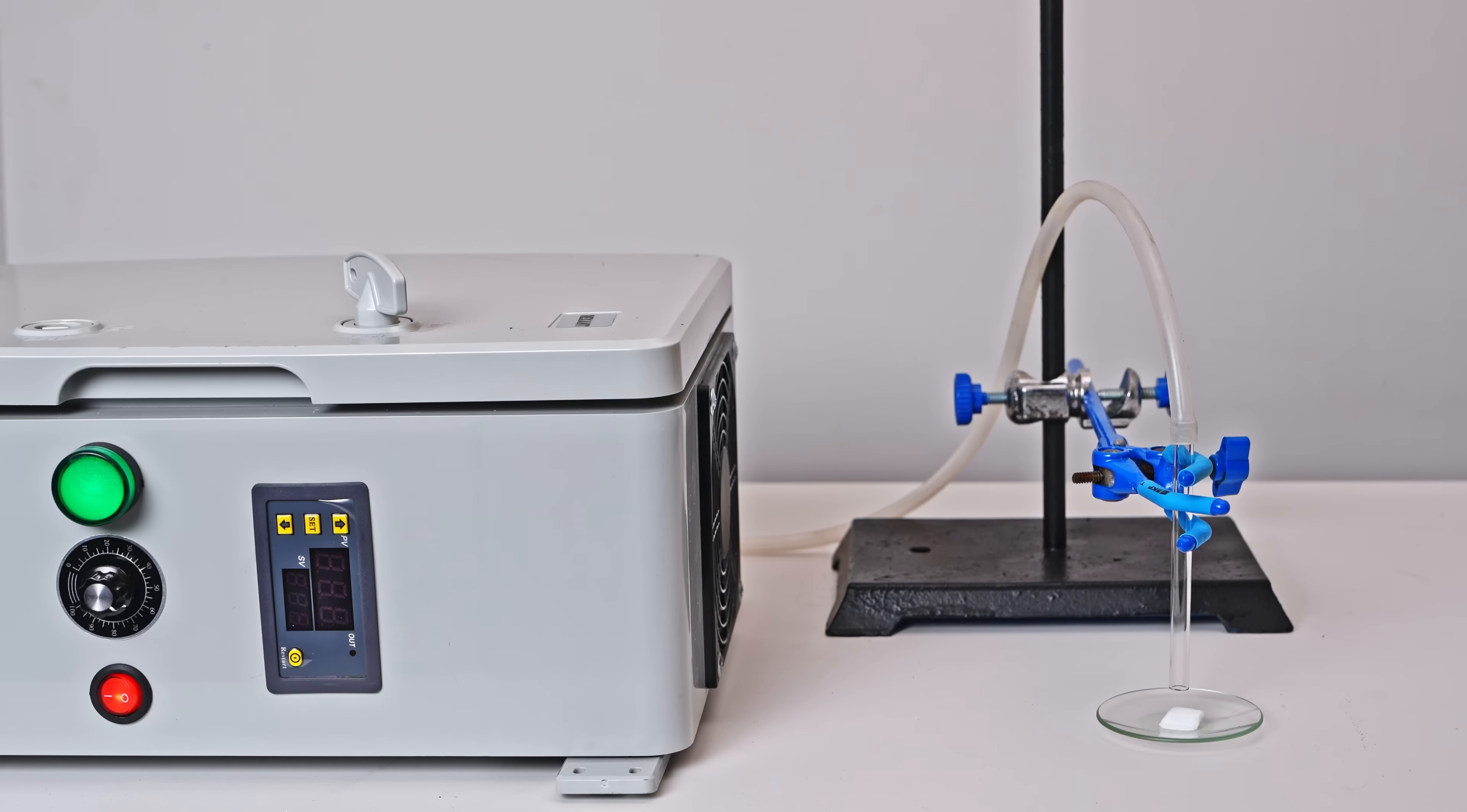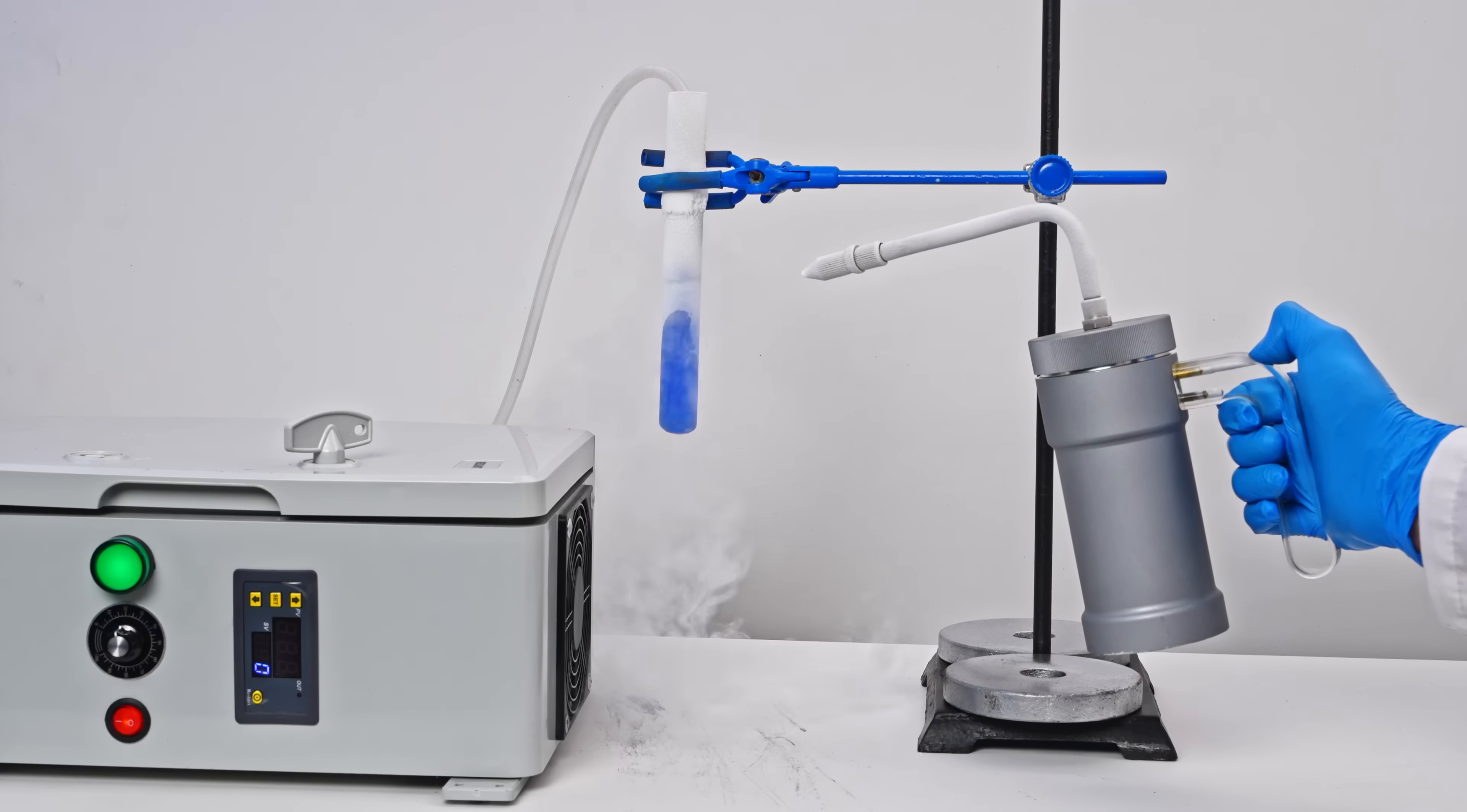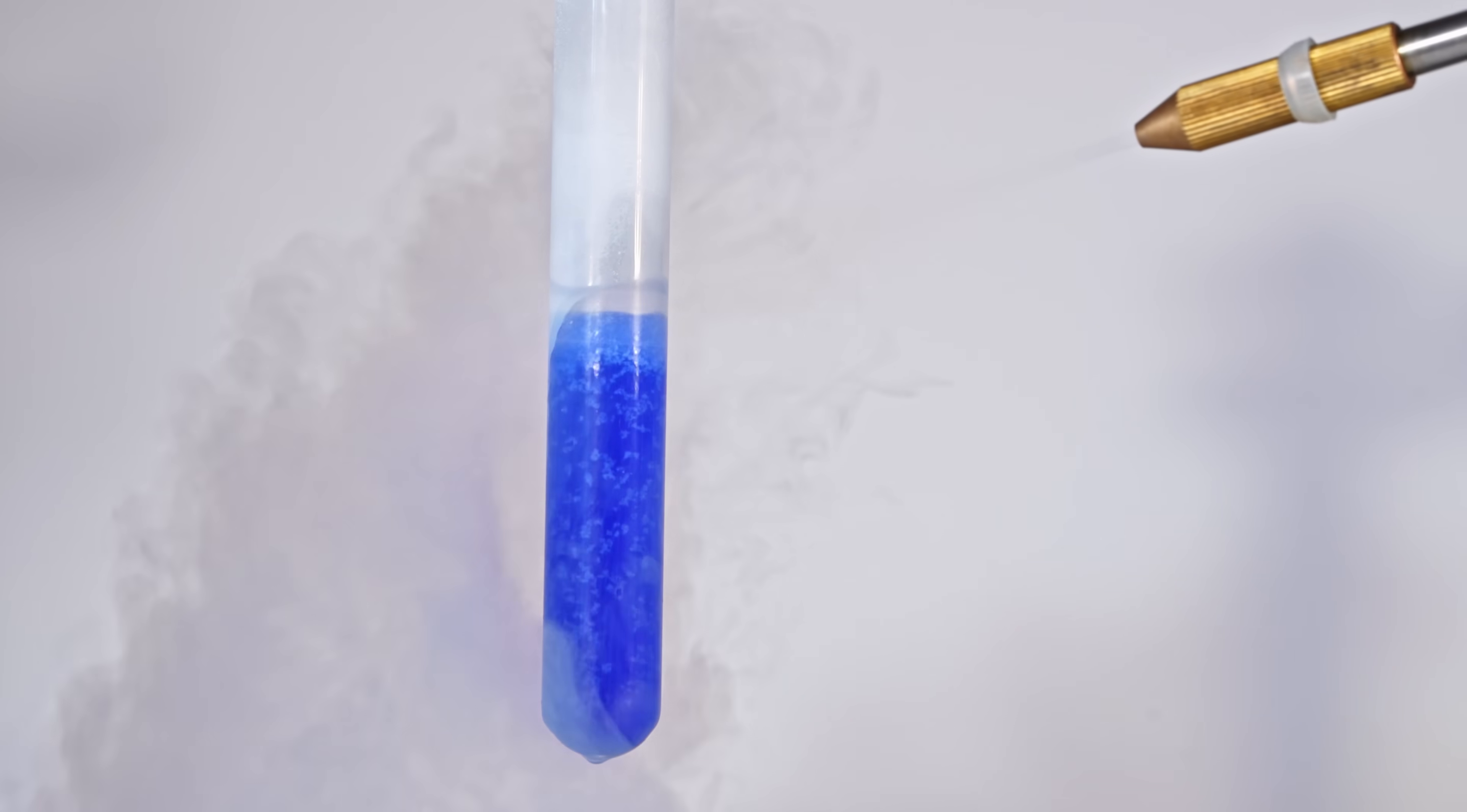Now I'm going to liquefy the gas and add it to the solid acetylene. Liquid ozonated oxygen has a blue color. The higher the concentration of dissolved ozone, the darker and richer the blue color. On this watch glass, there's a small amount of solid acetylene, and now I'm going to pour some liquid ozonated oxygen onto it.